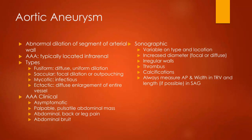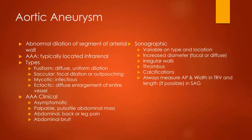A triple-A stands for abdominal aortic aneurysm. These are typically located in the aorta underneath where the renal arteries come off. The most common spot for triple-A to occur is right underneath where those renal arteries branch off, right before the aorta bifurcates into the common iliac arteries. Some common types of aneurysms are: fusiform, saccular, mycotic, and ectatic.